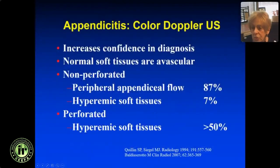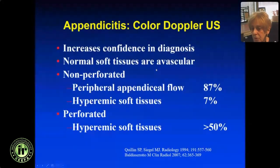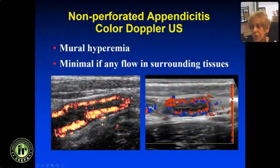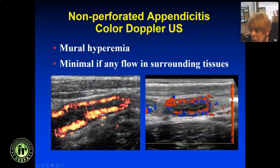Color Doppler can increase your confidence in the diagnosis. Normal soft tissues are avascular. If the appendix is inflamed but not perforated, you'll see flow in the wall and mucosa of the appendix with minimal flow in the soft tissues. If it's perforated, you see a lot more flow in the soft tissues. Here's a non-perforated one — the appendix lights up with hyperemia — and that just increases your confidence in the diagnosis.